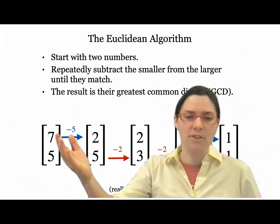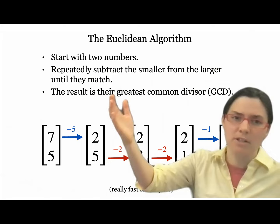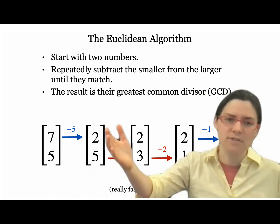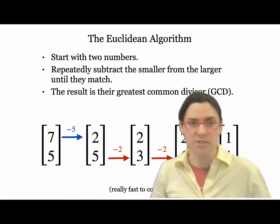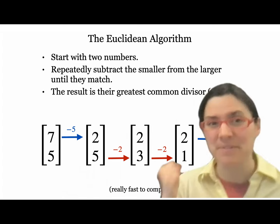Suppose you have two numbers like 7 and 5 and want to find their greatest common divisor. You repeatedly subtract the smaller from the larger until they match. For 7 and 5: subtract 5, get 2; subtract 2, get 5 minus 4 equals 1; subtract 1 and they match. The GCD is 1. This is fast and easy to compute — people love the Euclidean algorithm, and so do we.